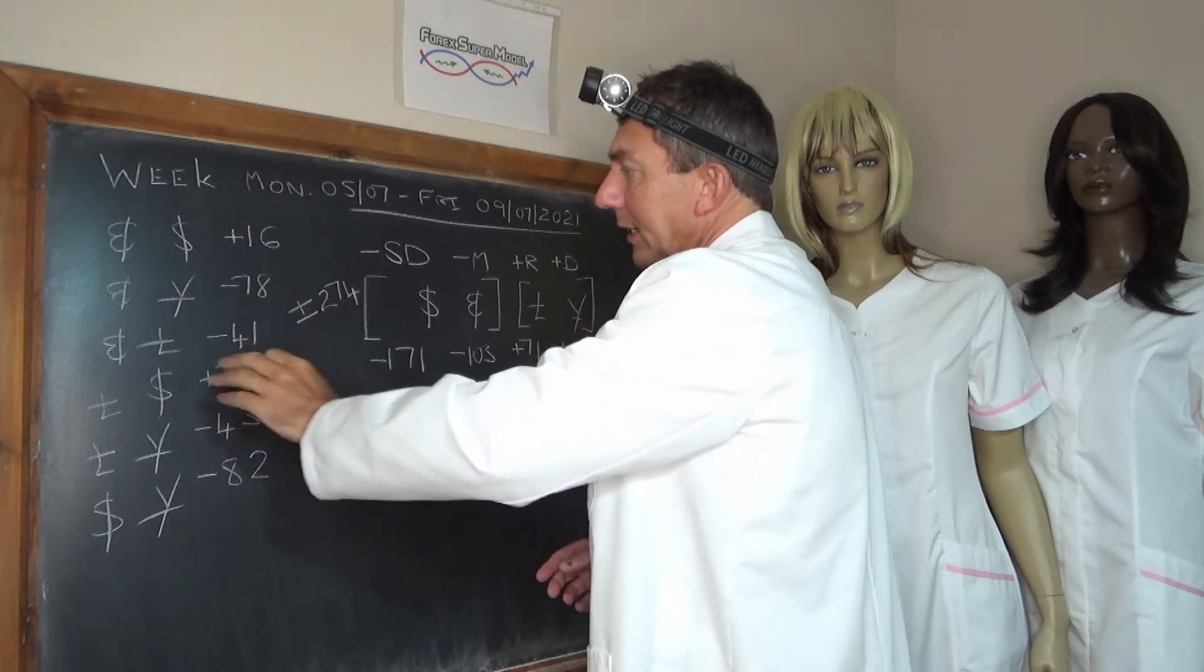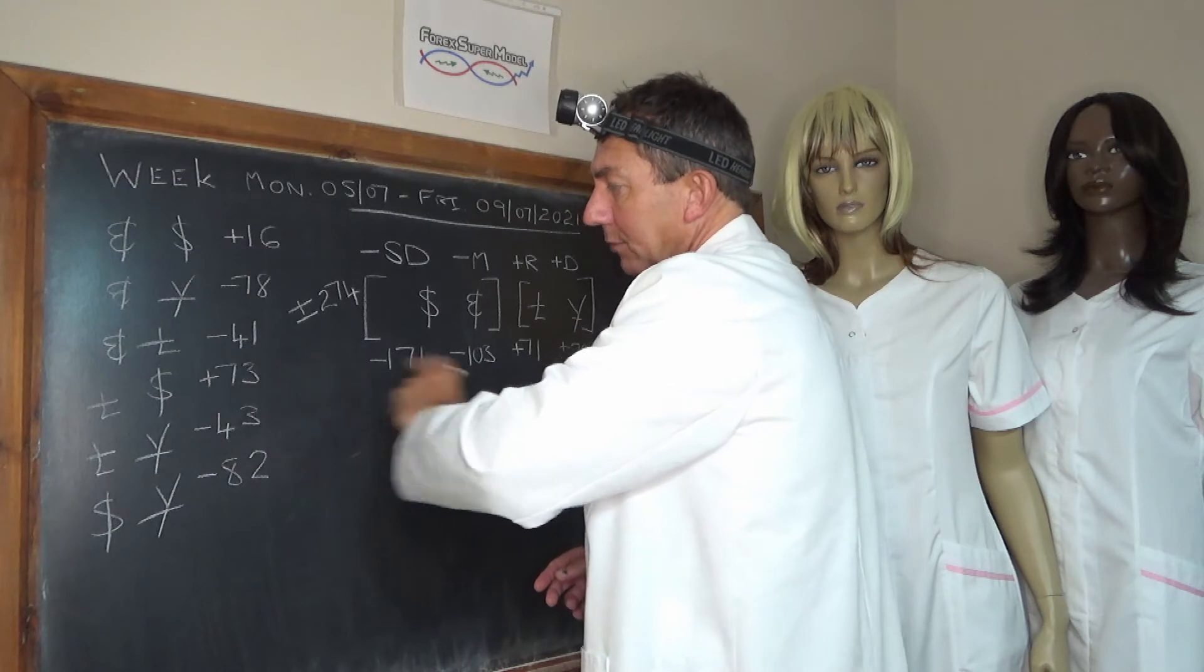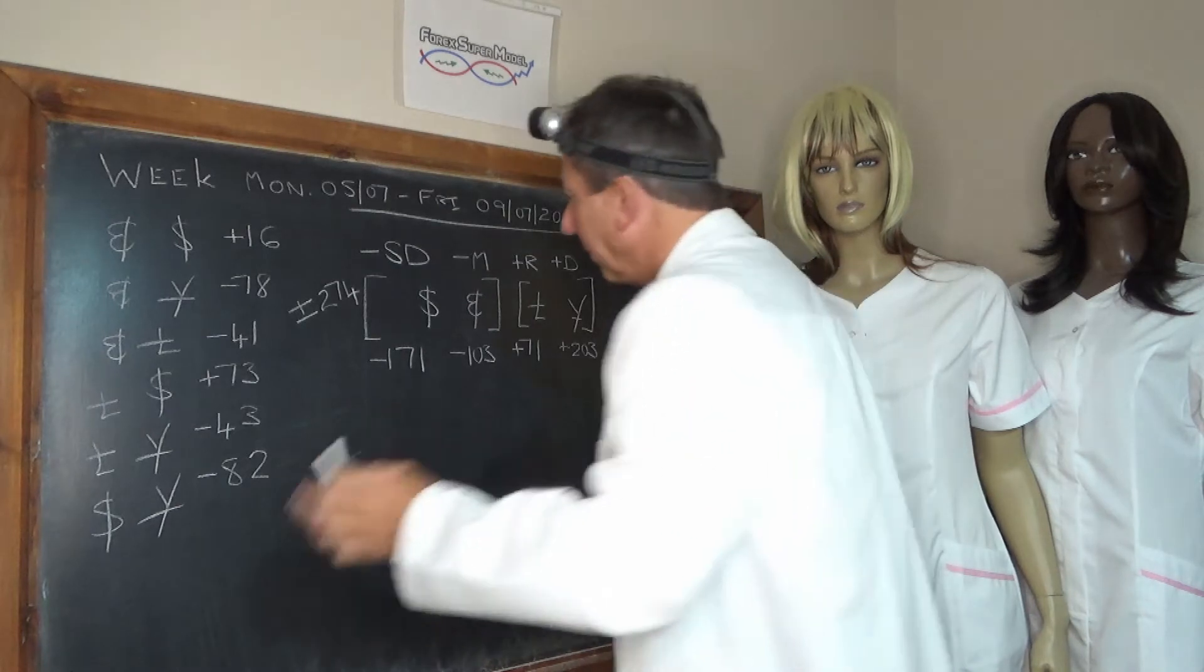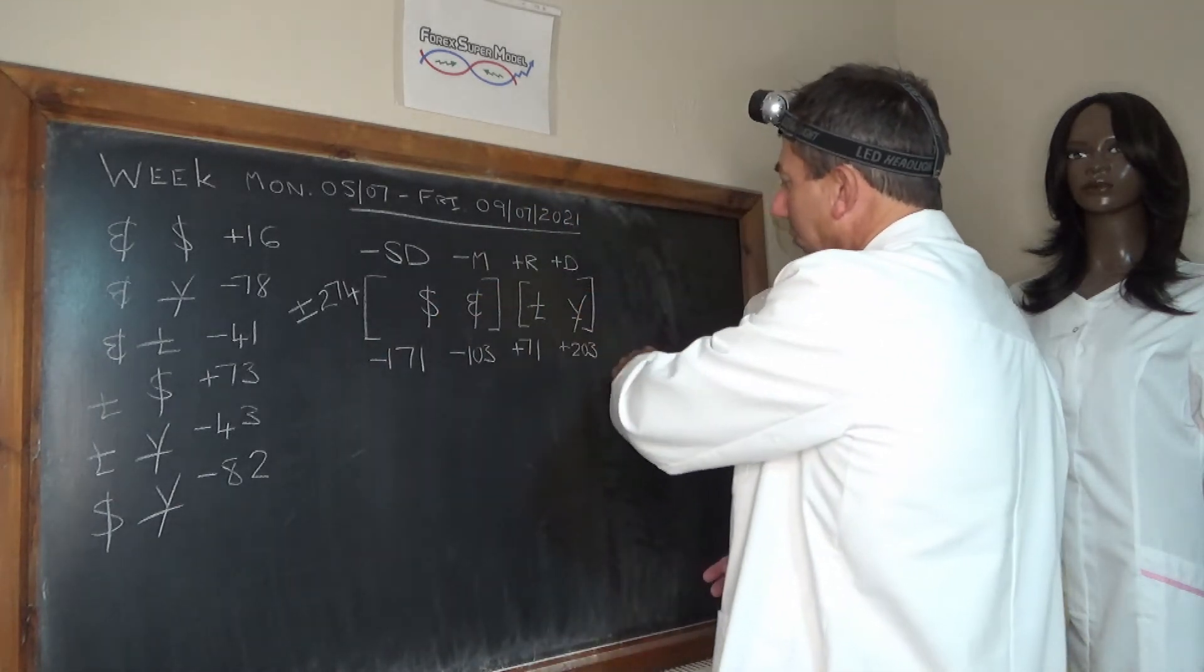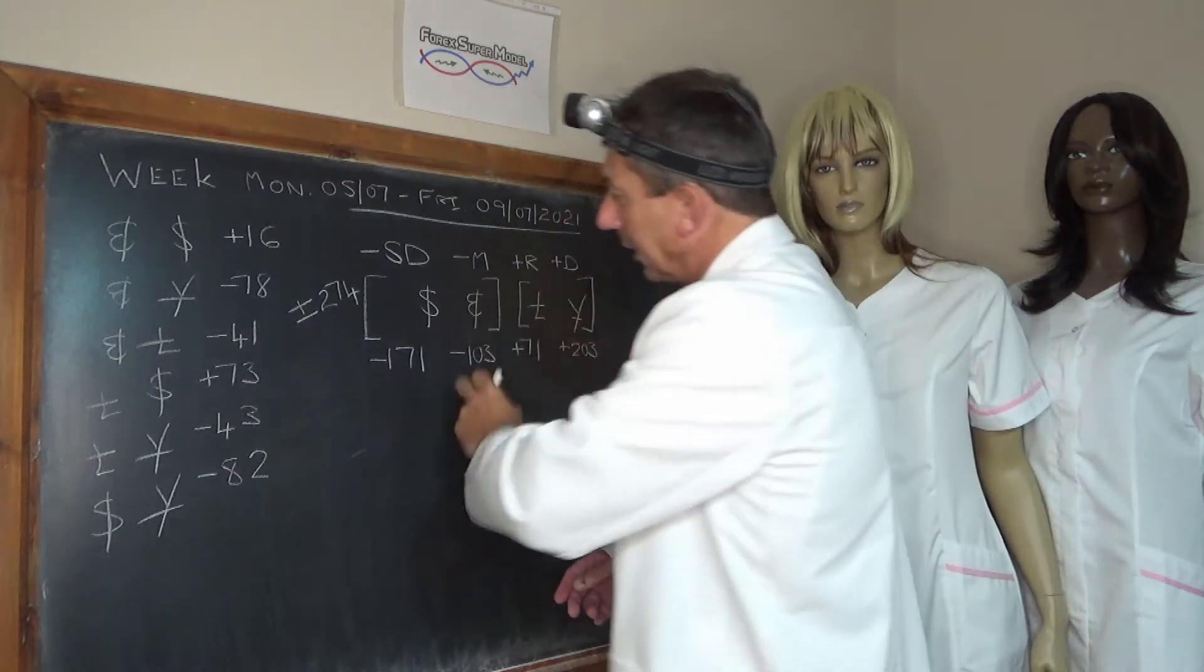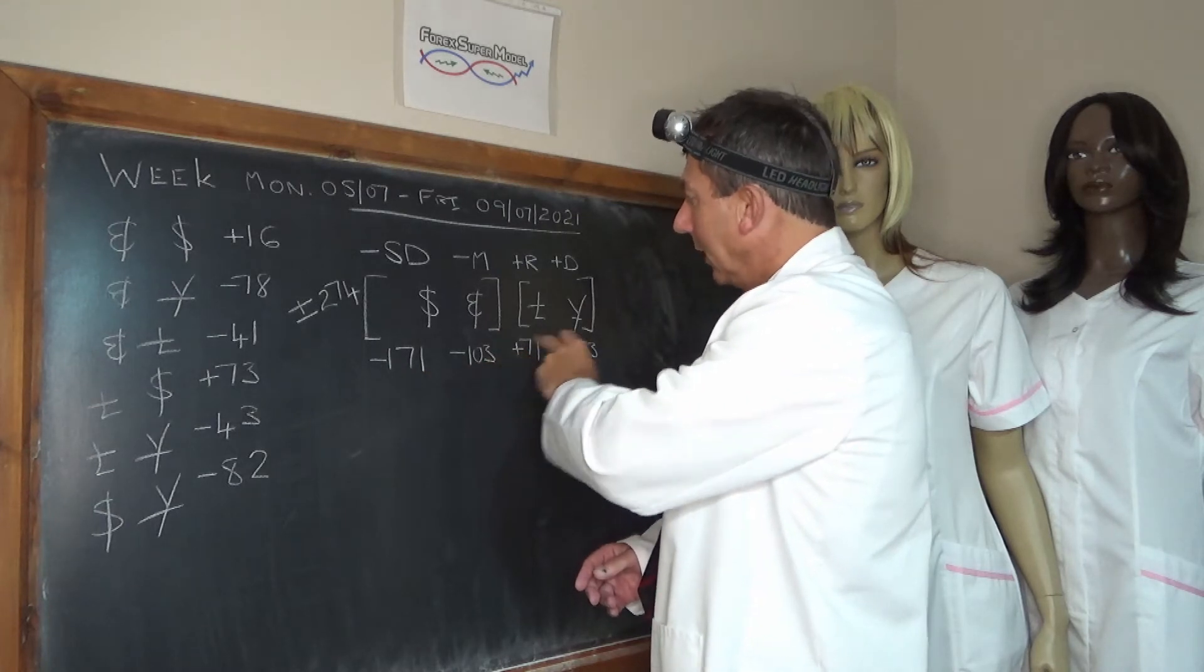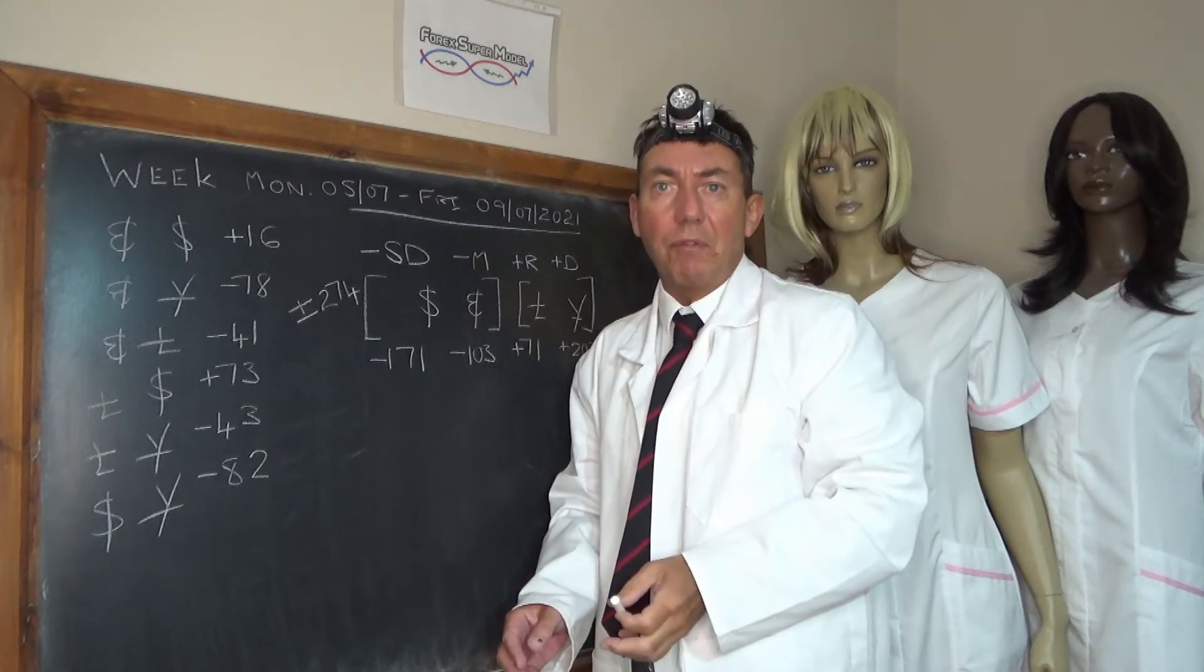EURYen minus 78, EURPound minus 41, GBPUSD plus 73, GBPYen minus 43, and USDYen minus 82. If you feed that into the mix, then you get a positive opposed driver in the Yen at plus 203. Front and back door flows mainly coming out of the dollar at minus 171, out of the euro at minus 103, and the pound was the positive rock at plus 71. Activity plus or minus 274.